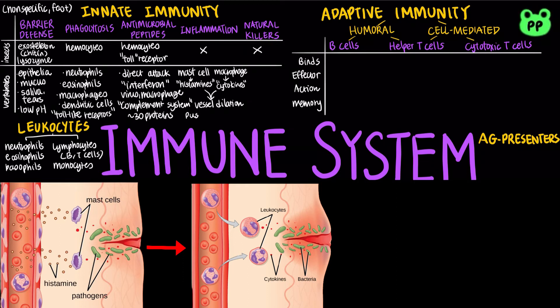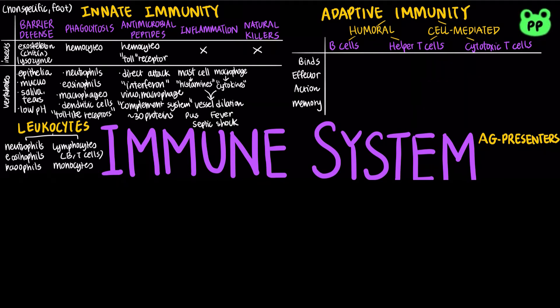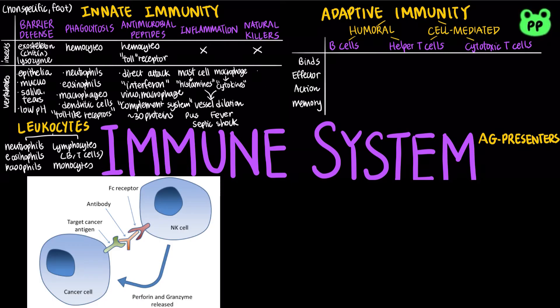Fever refers to a systemic inflammatory response triggered by pyrogens released by macrophages and toxins from pathogens. Septic shock refers to a life-threatening condition caused by an overwhelming inflammatory response. Natural killer cells are cytotoxic cells that target cancer cells and cells infected by viruses. They secrete perforins that form pores within cells and granzymes that initiate apoptosis.